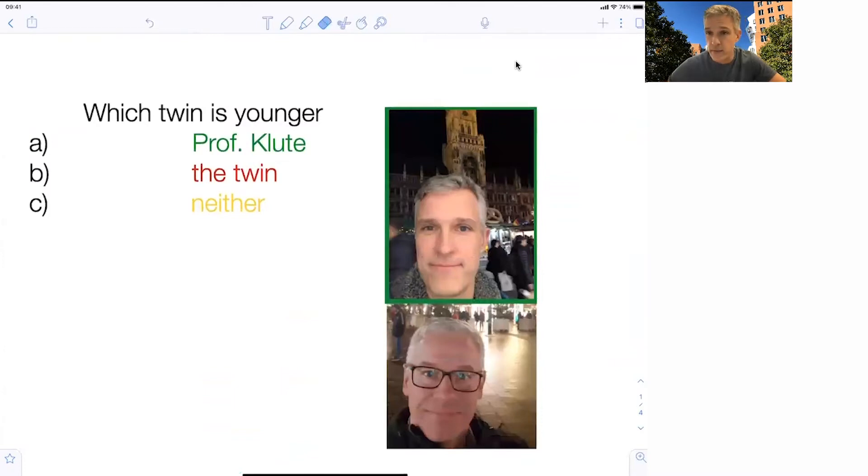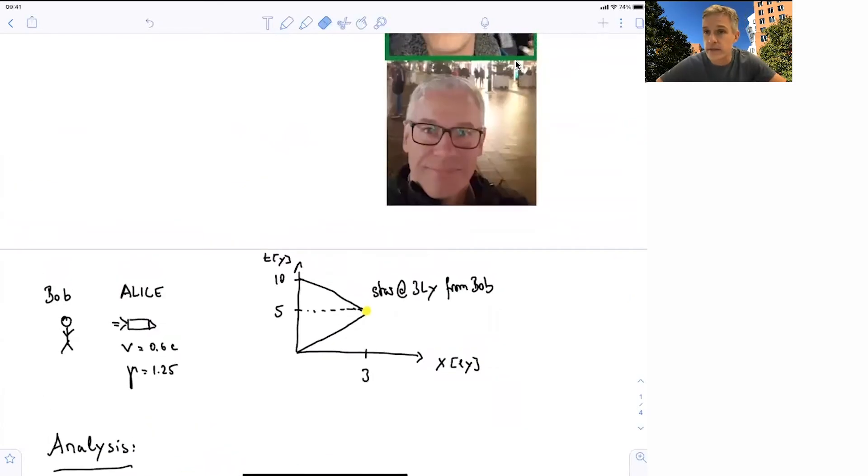Alright. On a more serious note, we want to quantitatively understand and analyze the situation. And we use Bob and Alice again. In this situation here, Bob stays local. And Alice has a spacecraft, and she moves with a velocity of 0.6 times the speed of light, a gamma factor of 1.25.